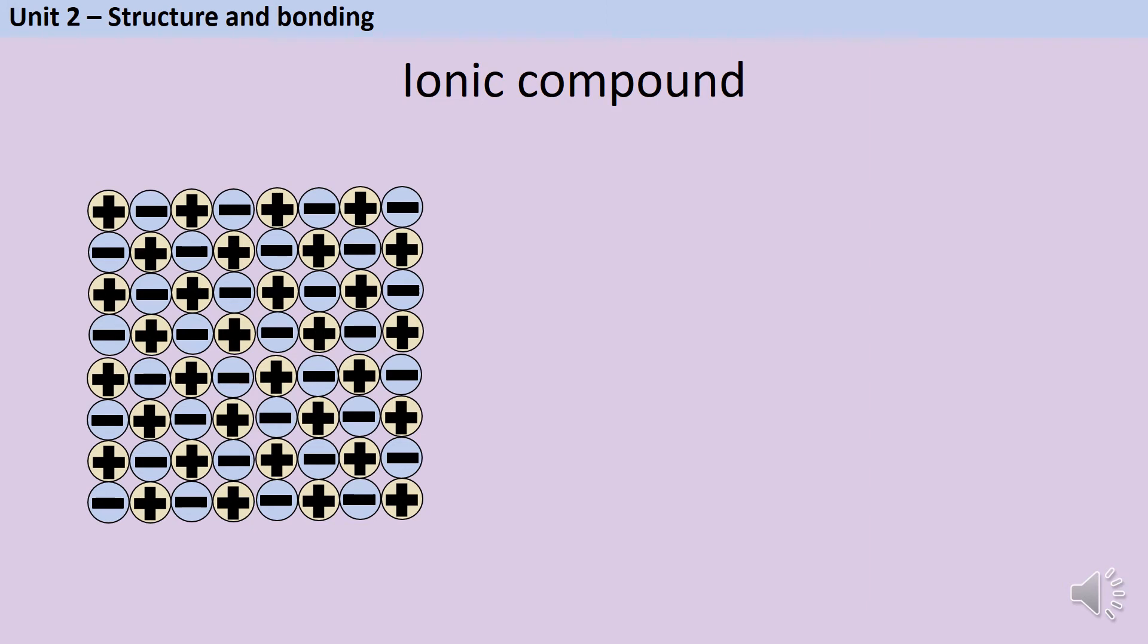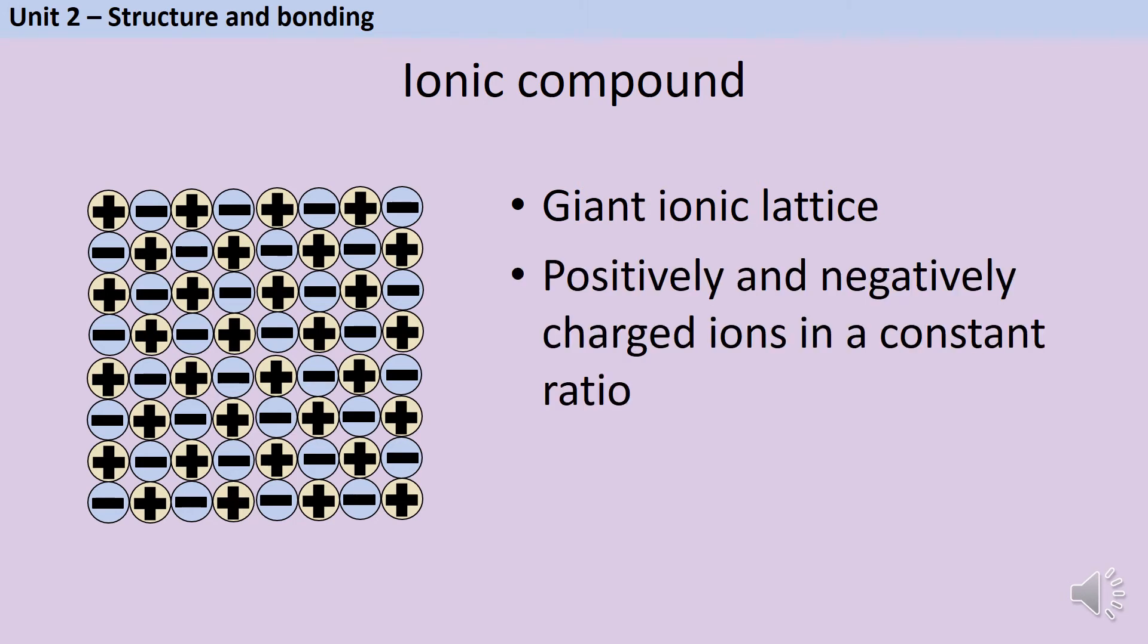In order to understand why it is that ionic compounds have these properties, we need to know what their structure looks like. When you have a covalently bonded substance, it might only have two or three or seven atoms in it, but an ionic substance is always a giant structure. We call this a giant ionic lattice, and what it means is that there are going to be thousands or even millions of ions. These positive and negatively charged ions are going to be mixed together in a constant ratio. So what that means is that there might always be one positive for one negative, or there might be two positive for one negative, but the ratio is always going to be the same in all the parts of that lattice.